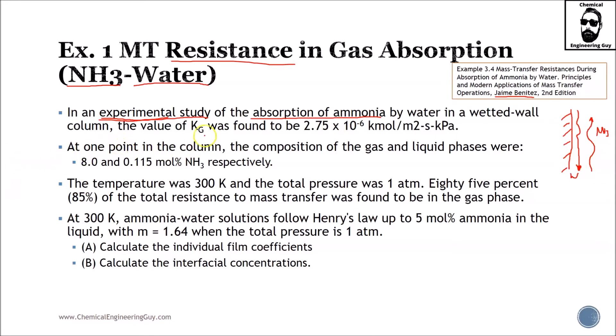The value of the overall mass transfer coefficient - how do I know this is overall? Well, this is uppercase - was approximately 2.75×10⁻⁶ kmol/m²·s·kPa. This is already telling us that we need to multiply by total pressure in order to calculate mole fractions. This model should be valid through all the column.